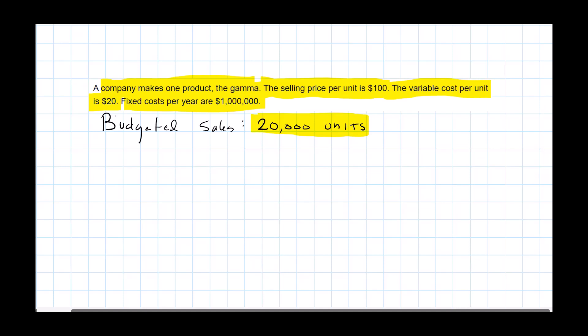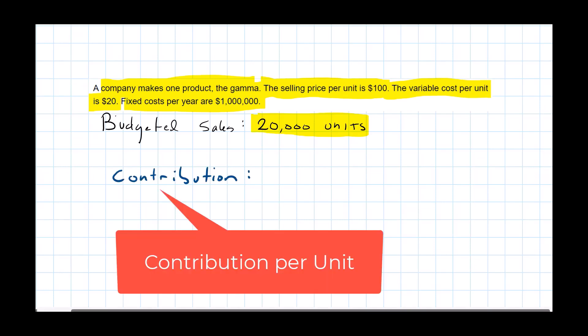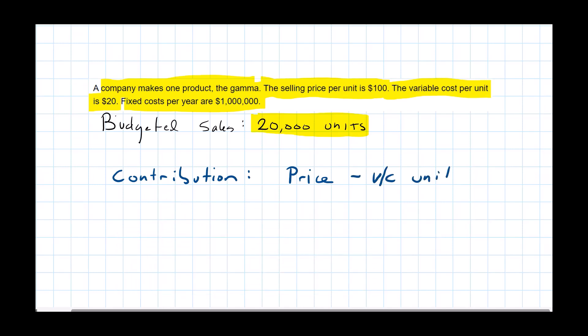So first thing we've got to remember is the idea of contribution. Very important concept. Contribution is the selling price minus the variable cost per unit. Think about it this way. We sell one of our units, from the revenue that we earn we need to pay the variable cost for making and selling that unit. What's left over contributes to the fixed costs.